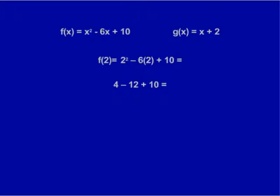If I wanted f(2), I simply substitute 2 for x in every part of the equation. So I get f(2) = 2² - 6(2) + 10, which would be 4 - 12 + 10, giving me 2.